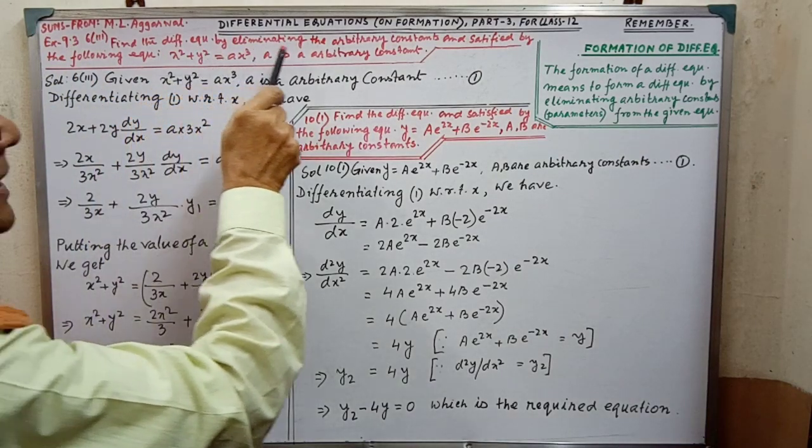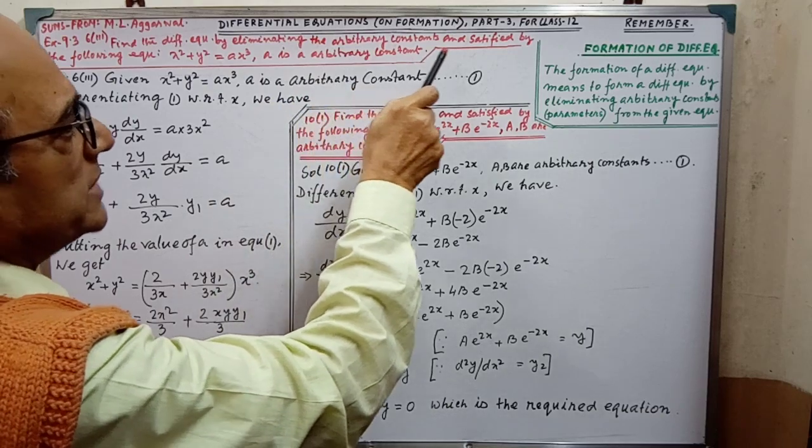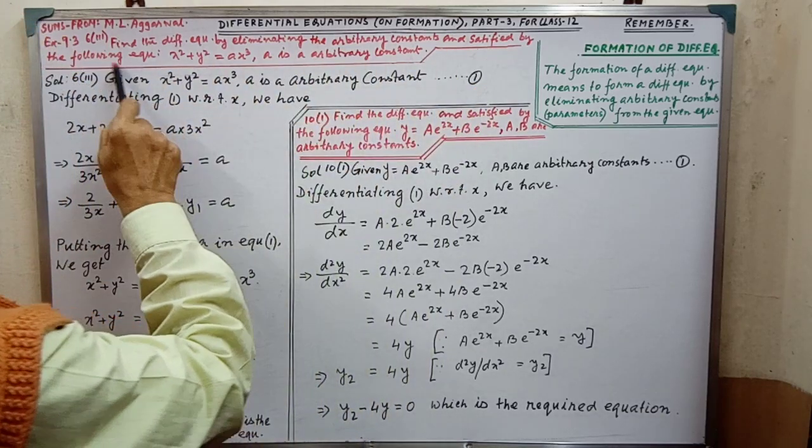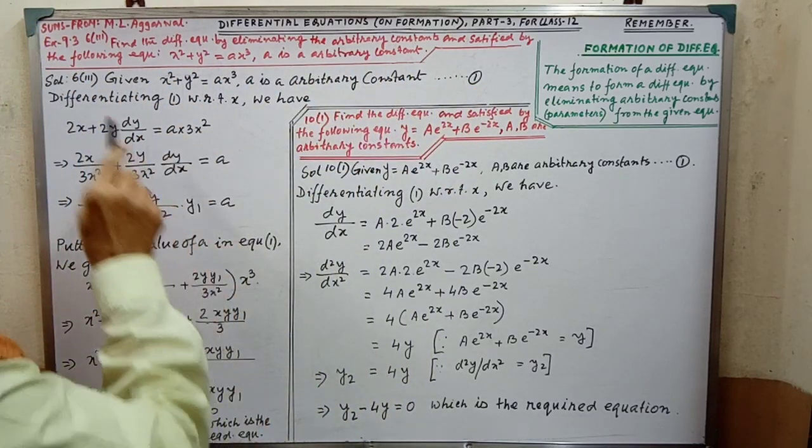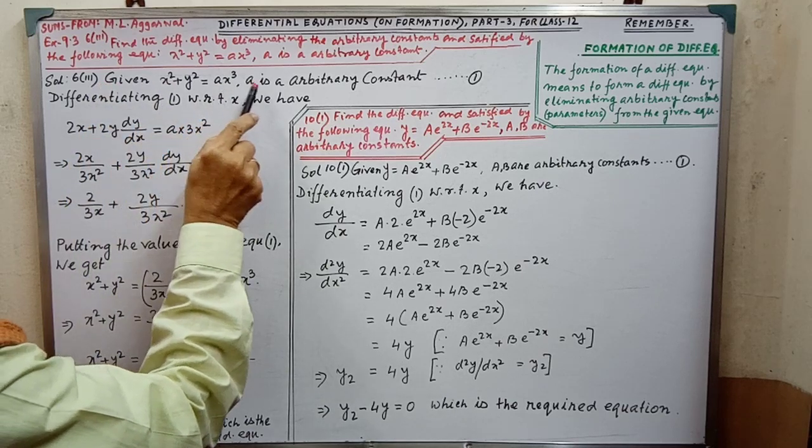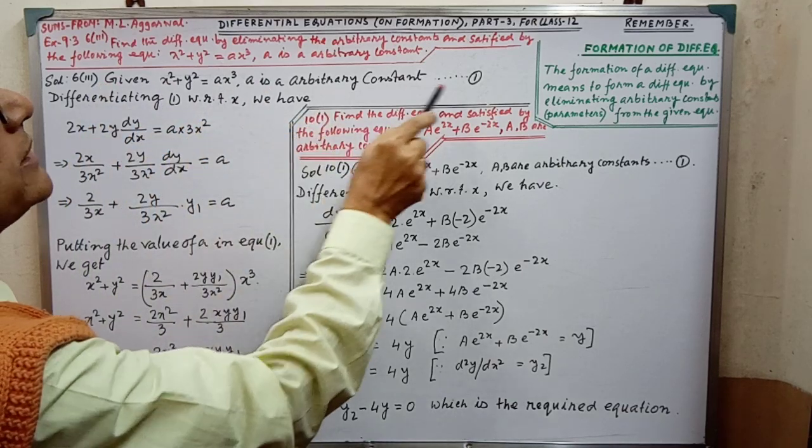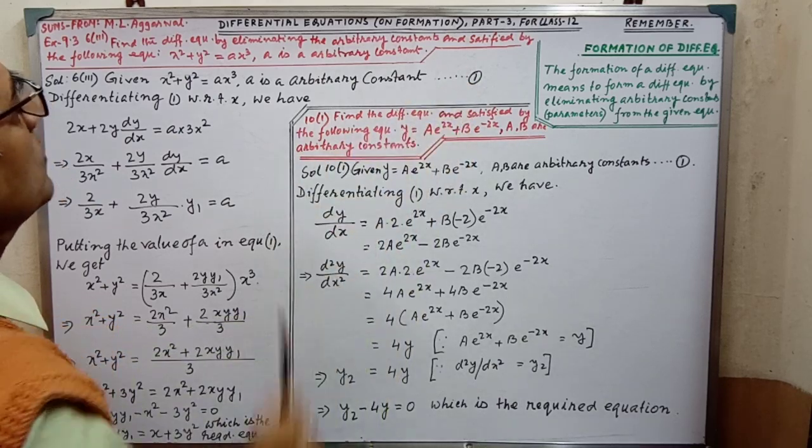Find the differential equation by eliminating the arbitrary constant and satisfied by the following equation. First, we have to write the equation, a is the arbitrary constant and denote this equation by 1.